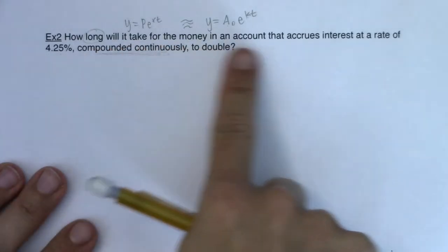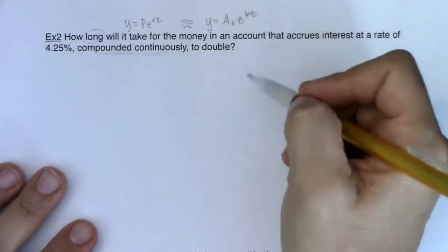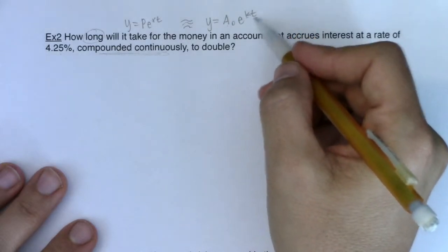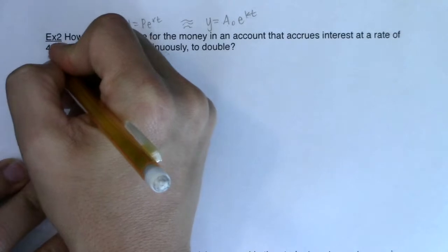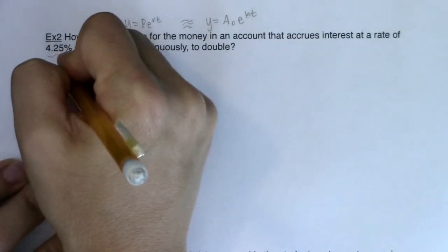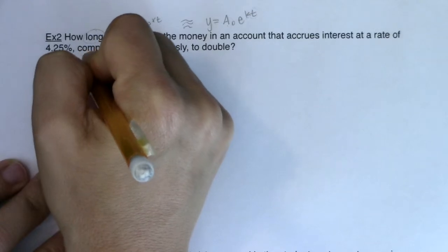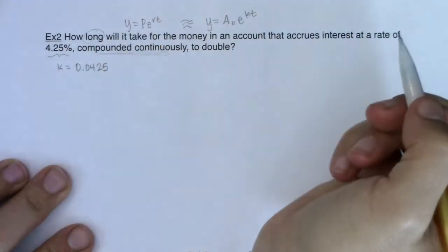So how long will it take this money, again, compounding continuously to double? All right, so I want this to double, meaning I want to solve for a time value. So at this point, if I see this continuous interest rate being 4.25%, I know that k in this problem, I'm going to rewrite that as a decimal is 0.0425. All right, so I'll keep that in mind.